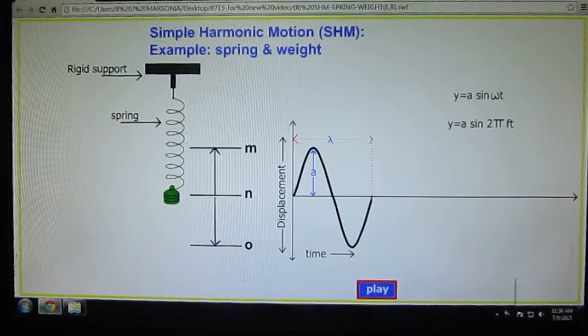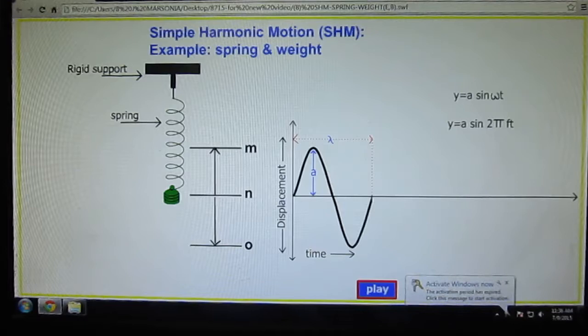The mass or weight attached to an end of a spring which is rigidly supported and pulled slightly is an example of simple harmonic motion.